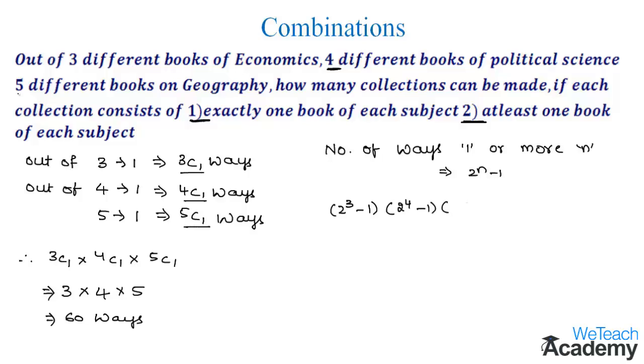And there are five different books of geography, so we can select one book out of five geography books in 2^5 - 1 ways.